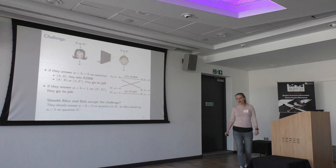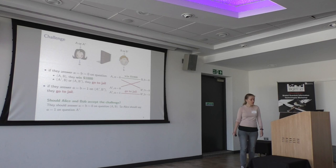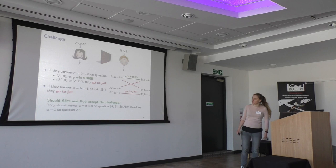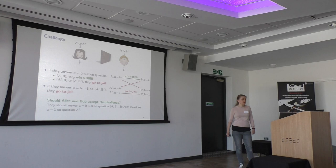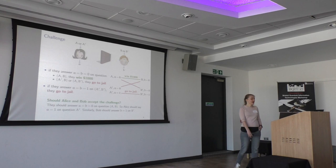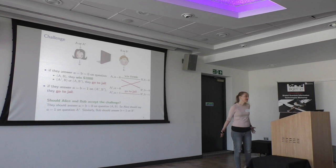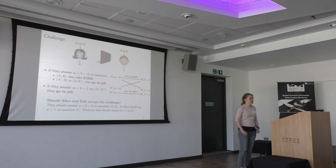Alice thinks about it and says: I know if Bob is asked A, he's going to answer with zero. So if I get asked A prime, I should not say zero, because that will cause us to go to jail. So Alice is going to say one on question A prime. Similarly, Bob should answer one on question B prime. And now there's the problem — if we ask both of them the prime questions, A prime and B prime, then they will end up going to jail. So if you're classical, you should not accept this challenge.